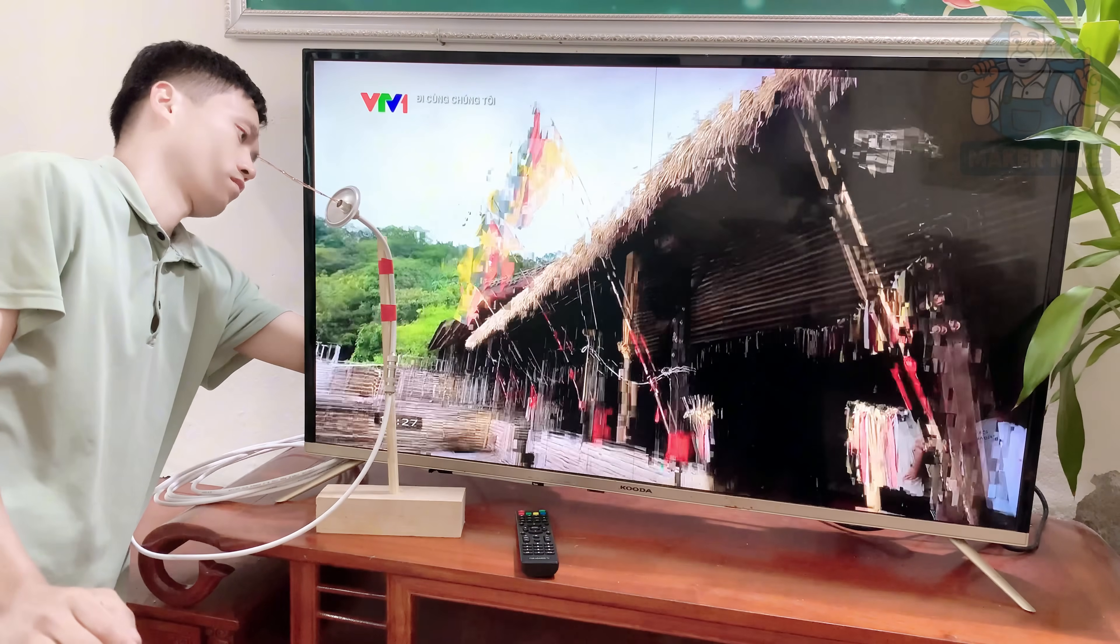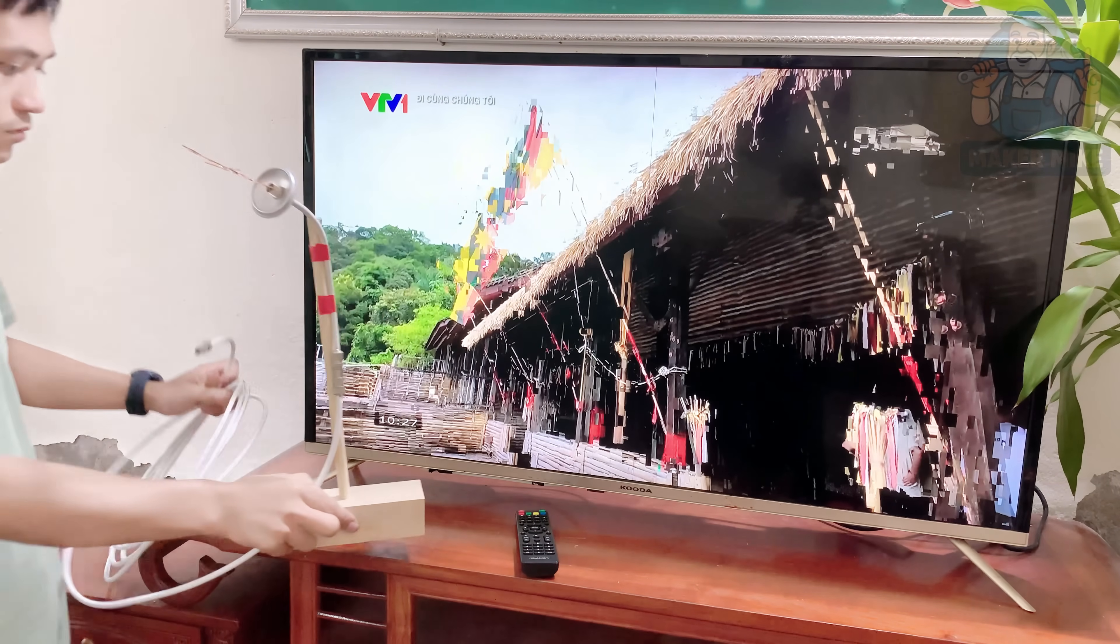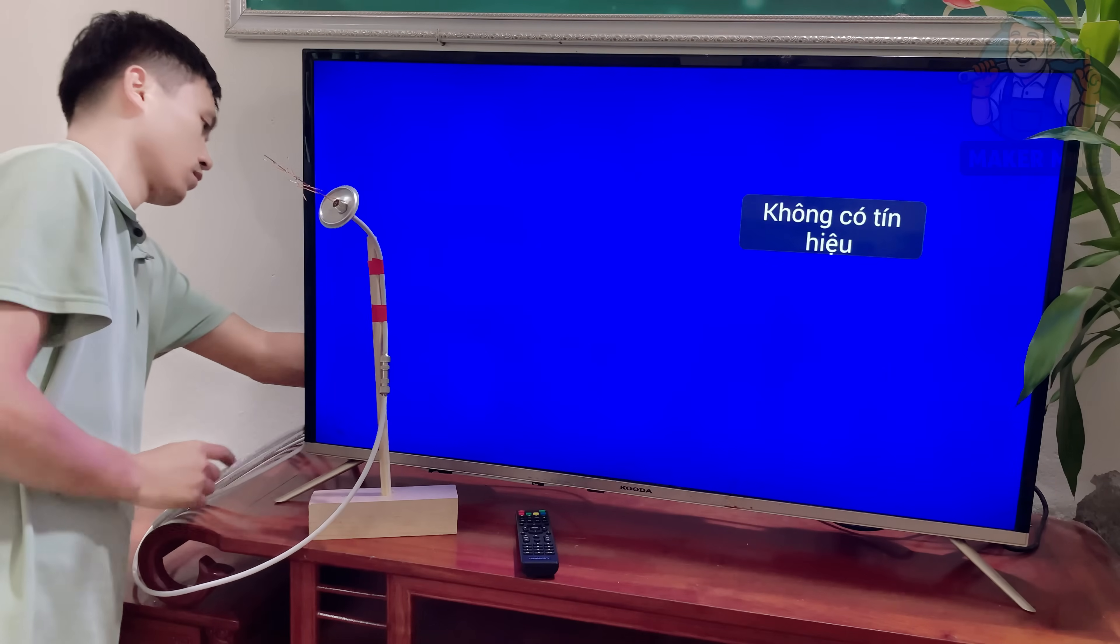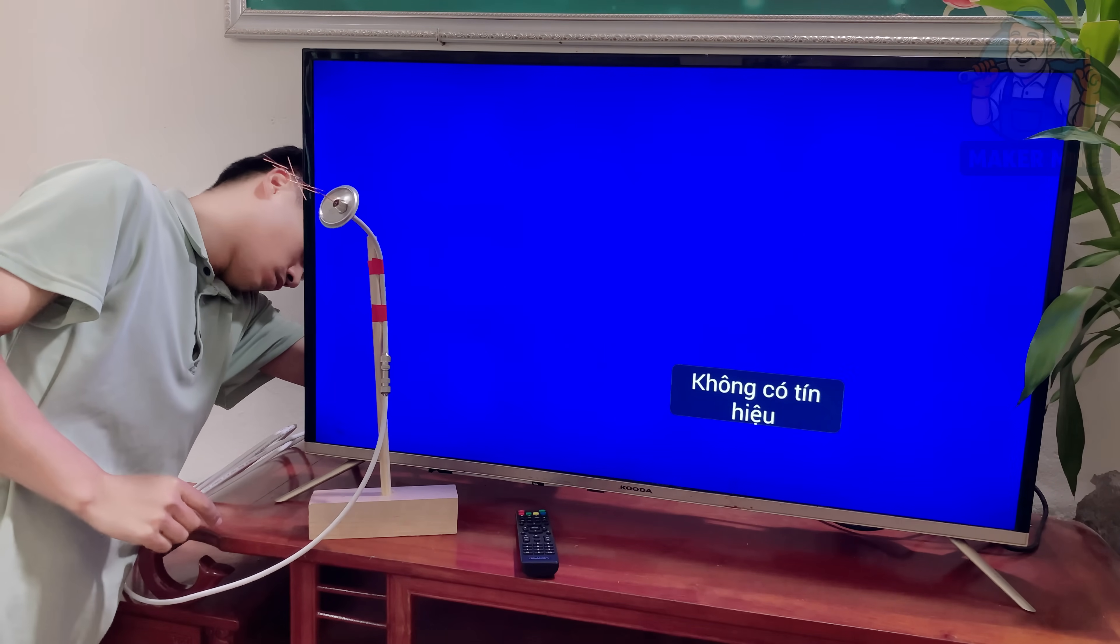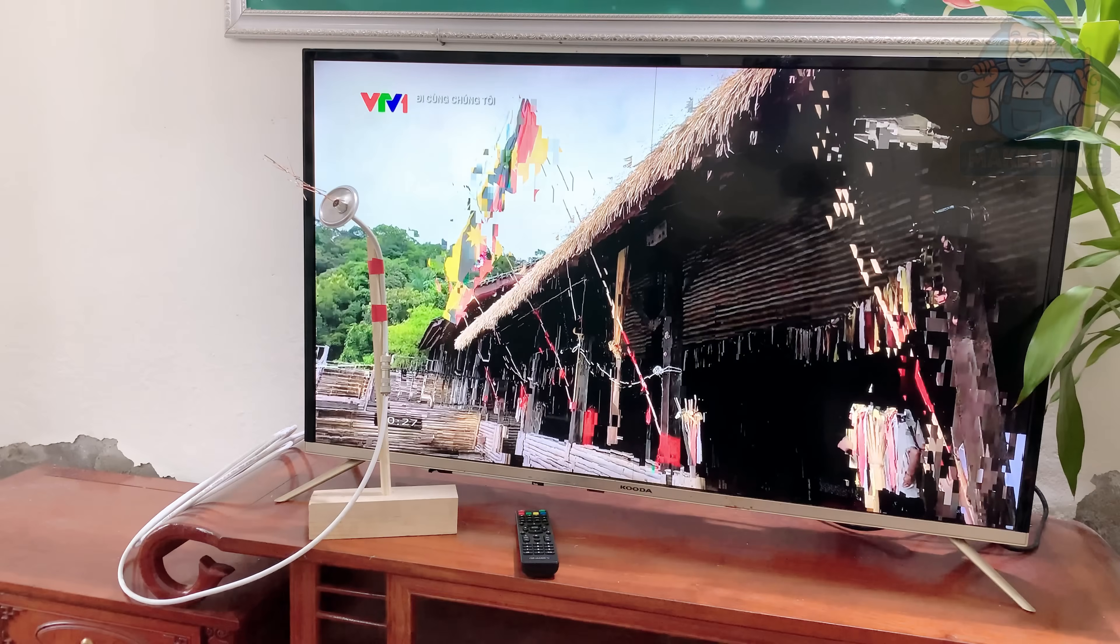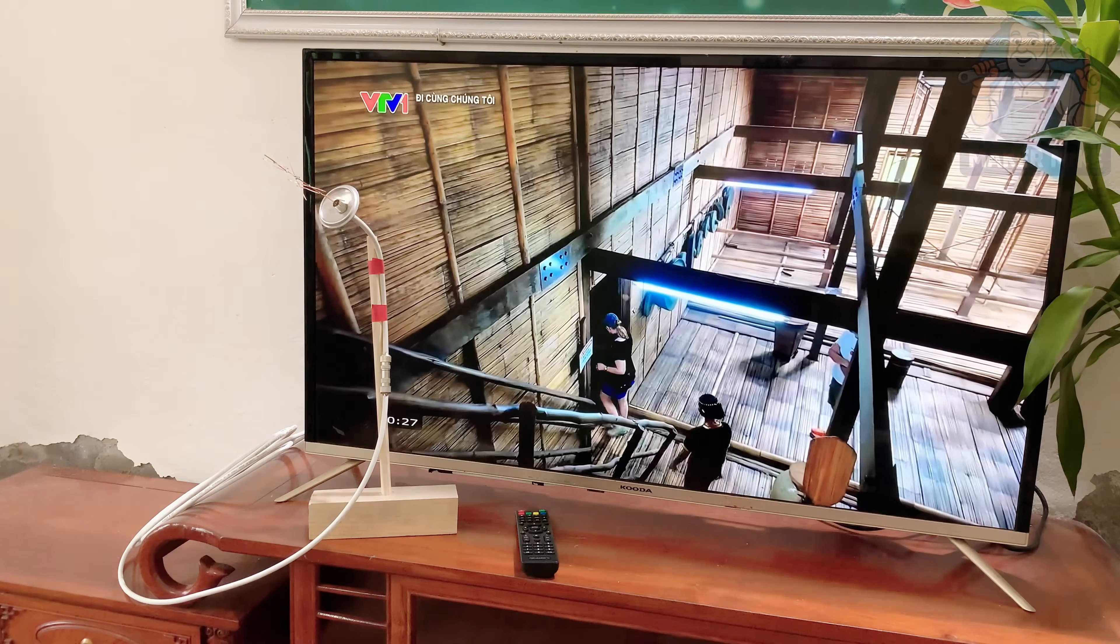And there you have it, a working TV antenna made from nothing more than a soda can, a bit of wire and some old parts from around the house. It's simple, it's smart and it proves that with a little creativity, you don't need expensive gadgets to get great results.